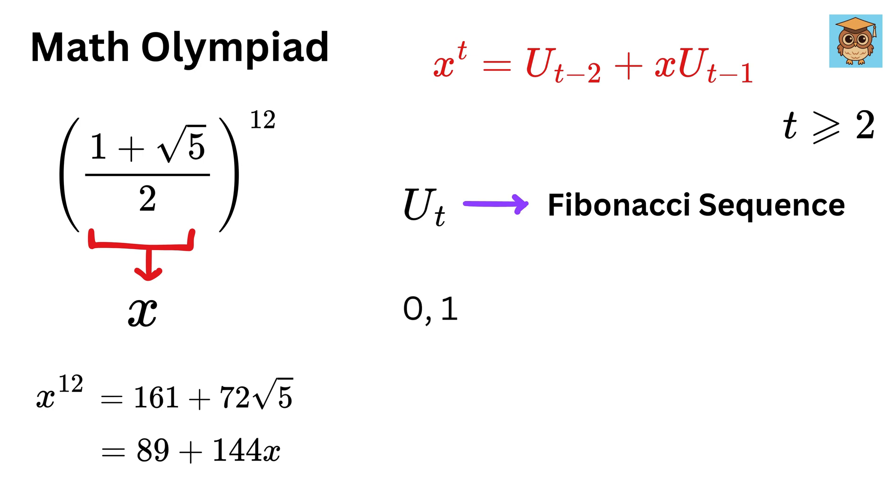So the sequence goes like 0, 1, then 0+1 or 1, then 1+1 or 2, then 1+2 or 3, then 2+3 or 5, and so on.